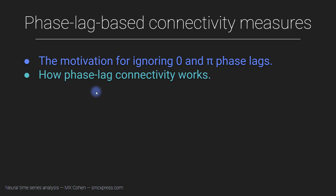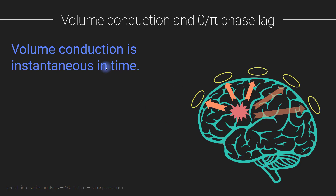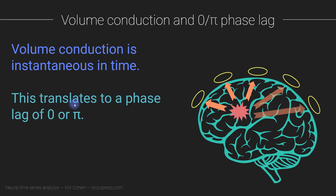Volume conduction is instantaneous in time. The electrical fields generated by a population of cells contribute instantaneously to the activity measured at all electrodes. So if there's only one source in the brain, the synchronization between two electrodes is spurious — it just reflects that both electrodes are measuring the same underlying source. That instantaneous synchronization translates to a phase lag of zero or pi.